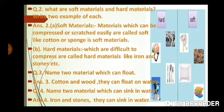Question number two: What are soft material and hard material? Write two examples of each. Soft material — material which can be compressed or scratched easily is called soft material, like cotton and sponge. Hard materials — which are difficult to compress are called hard materials, like iron and stone. Iron means लोहा, stone means पत्थर.